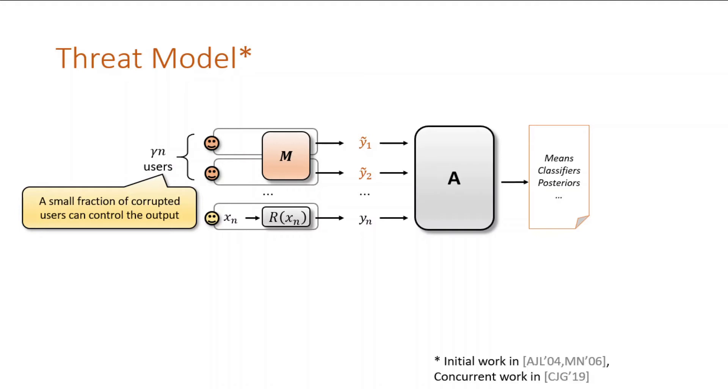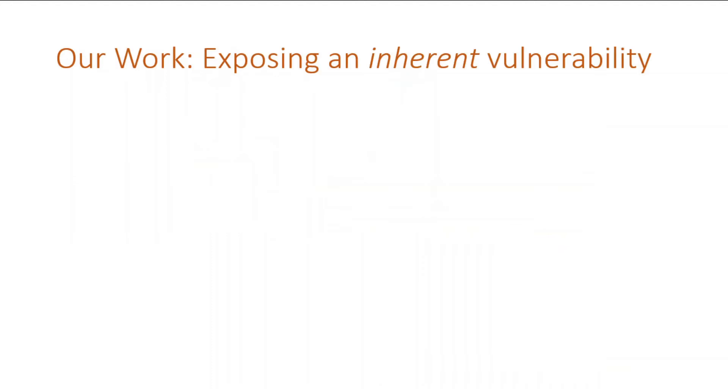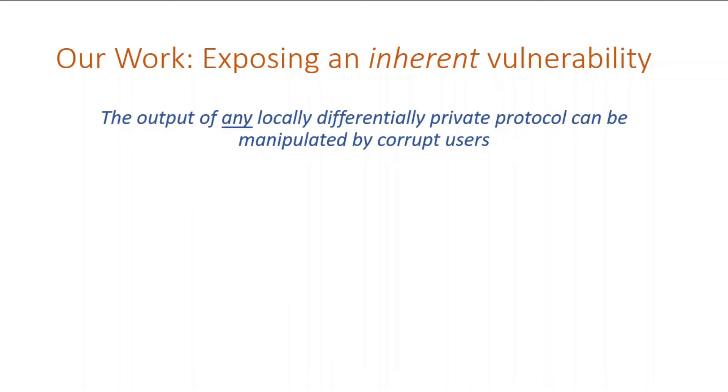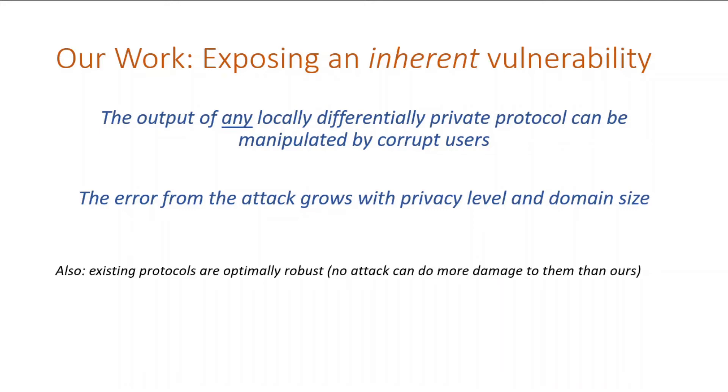Our work shows that only a small gamma is necessary to control the aggregator's output. Attacks in this model were considered in prior and concurrent work, but in our work we expose that powerful attacks are inherent in the model. The output of any locally private protocol can be manipulated by corrupt users in such a way that the error grows with the privacy level and domain size. We also show that optimally robust protocols exist. No attack can do more damage to them than our attack.